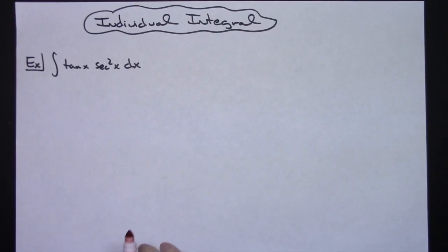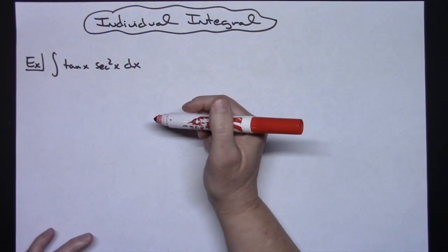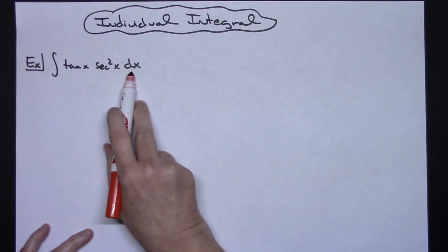In this video, I'm going to be working out an individual integral. It is going to be a basic, straightforward u-substitution integral that would be found in a calc 1 class. We're going to integrate tangent x secant squared x dx.